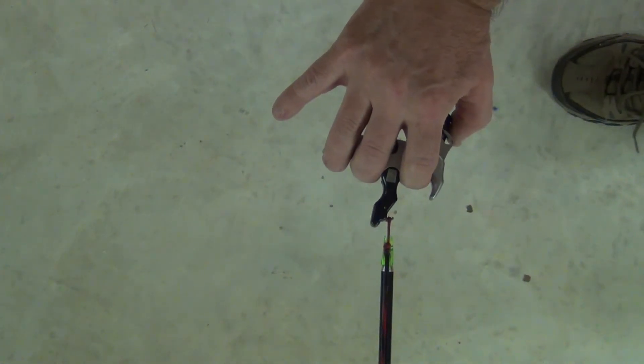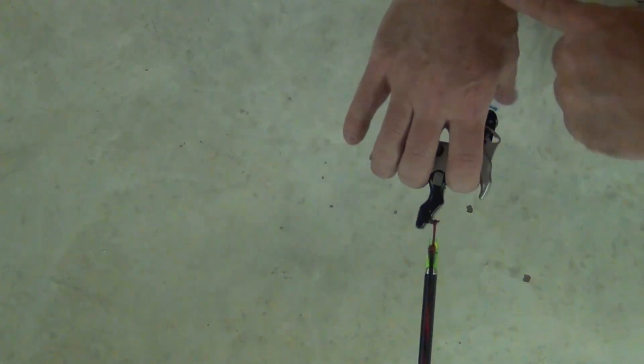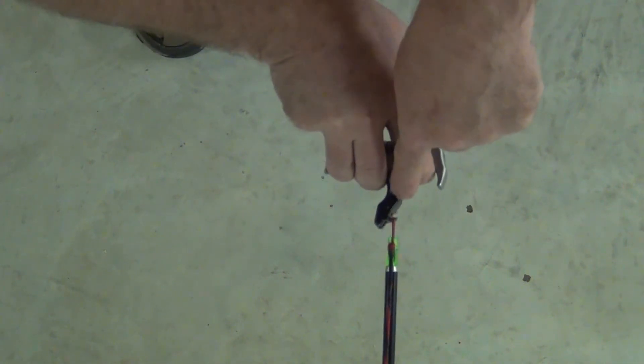When the release breaks, everything moves forward from this hook. Not from your wrist, not from your elbow, not from your forearm. From the hook.